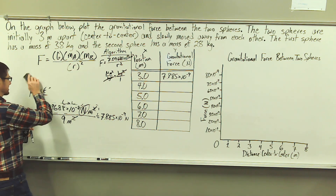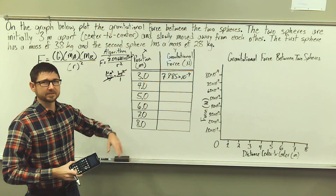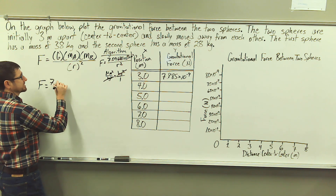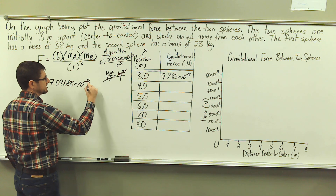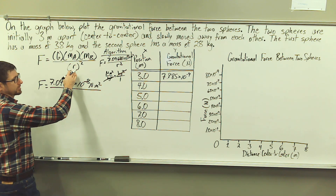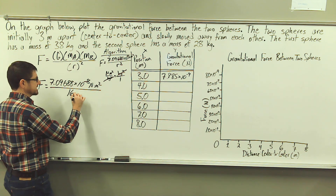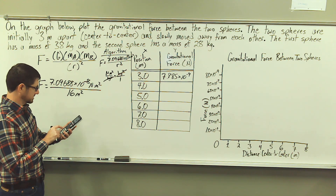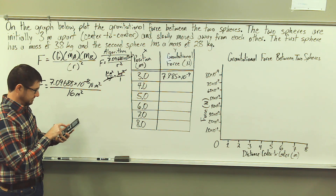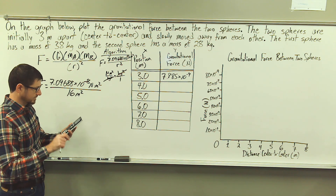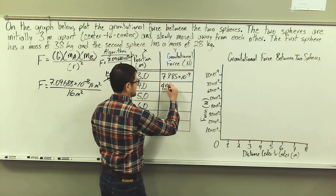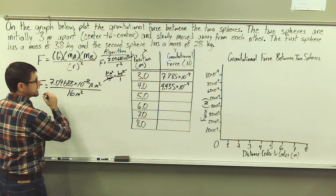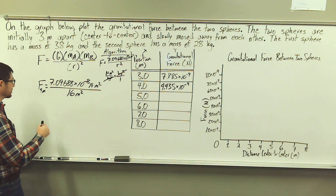Let's calculate the force of gravitational attraction for four meters. F equals 7.09688 times 10 to the negative 8th newton meters squared divided by four meters squared, which is 16 meters squared. That gives us 4.435 times 10 to the negative ninth newtons. This result is for four meters.